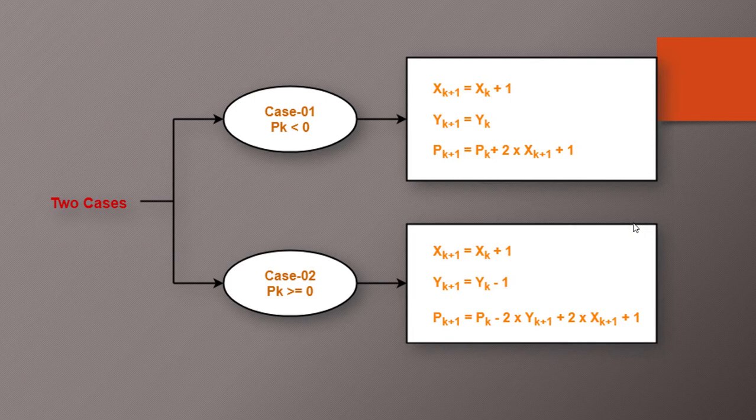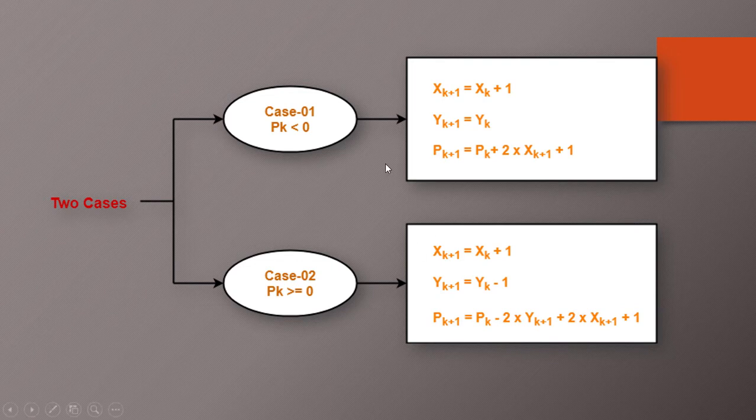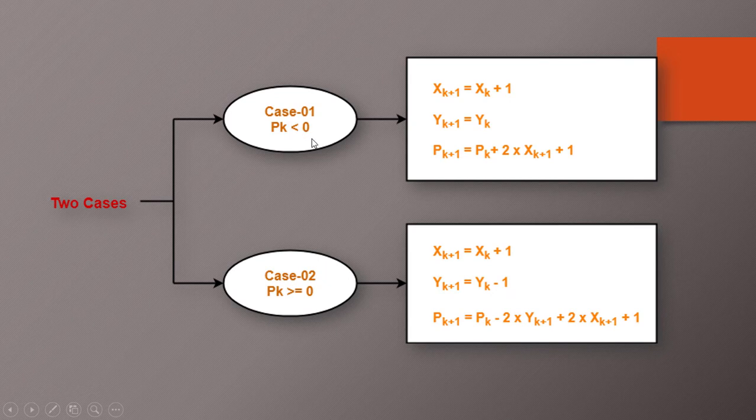Now the next step is when we will calculate our decision parameter. On the basis of decision parameter value we are having two cases. In case 1 if decision parameter is less than 0, then we will increment our XK and we will keep YK to get XK plus 1 and YK plus 1 respectively. And the new decision parameter formula is calculated with the help of PK plus 2 into XK plus 1 plus 1.